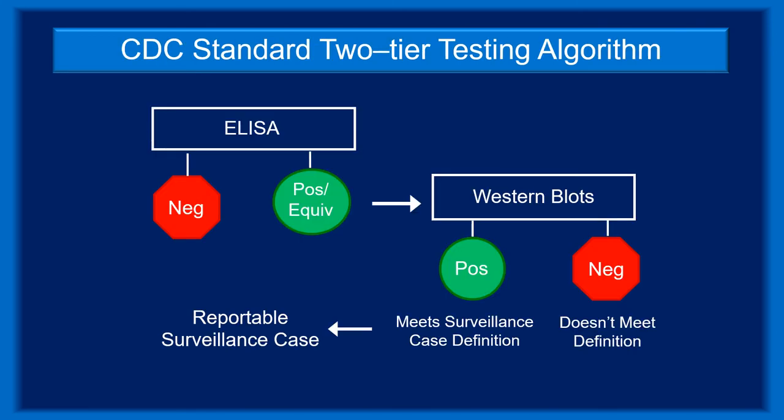In 1995, the CDC adopted diagnostic lab criteria for use in its surveillance case definition. The criteria standardized Western blot interpretation and required that patient samples must be positive on sequential testing in order to satisfy the case definition for Lyme disease.